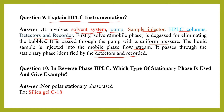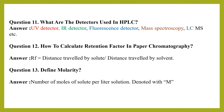The next question: in reverse phase HPLC, which type of stationary phase is used? In reverse phase HPLC, a non-polar stationary phase is used. Silica gel C18 is generally used as the stationary phase in reverse phase HPLC.